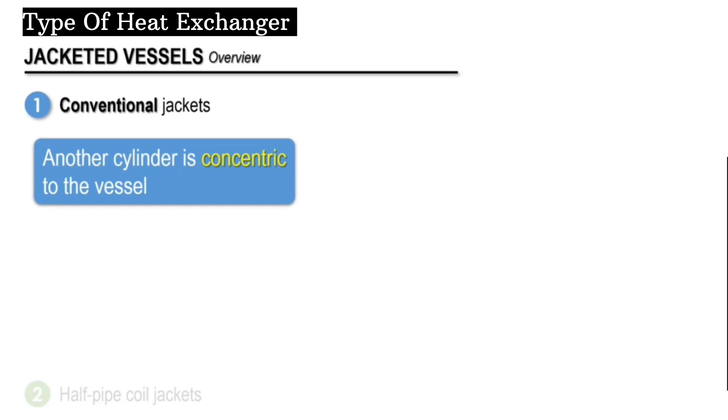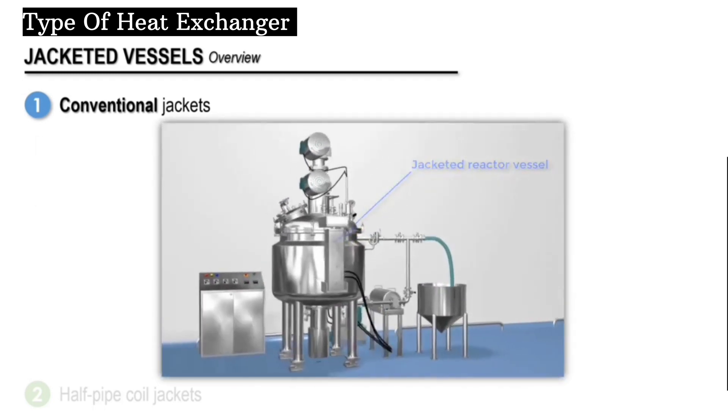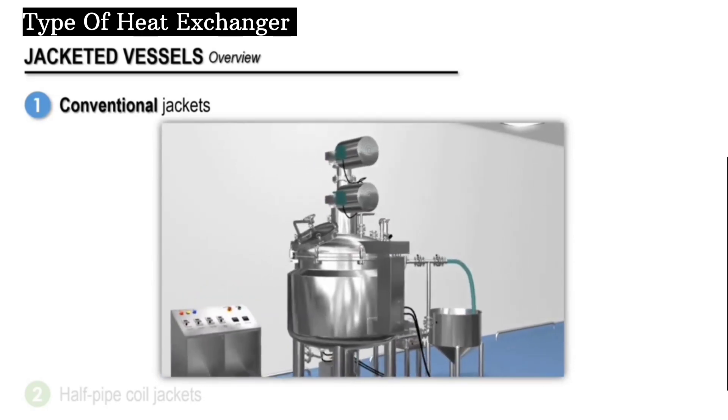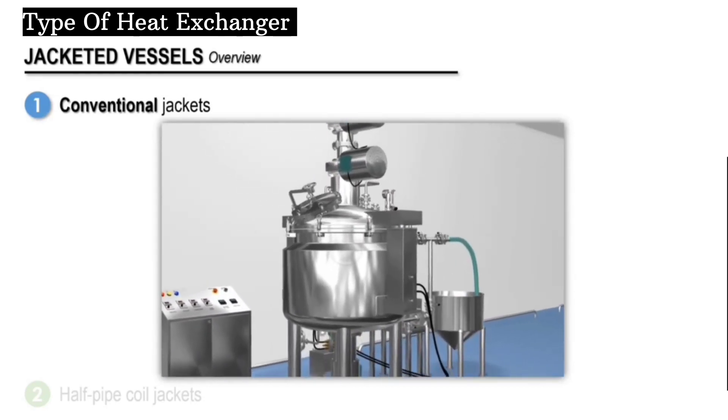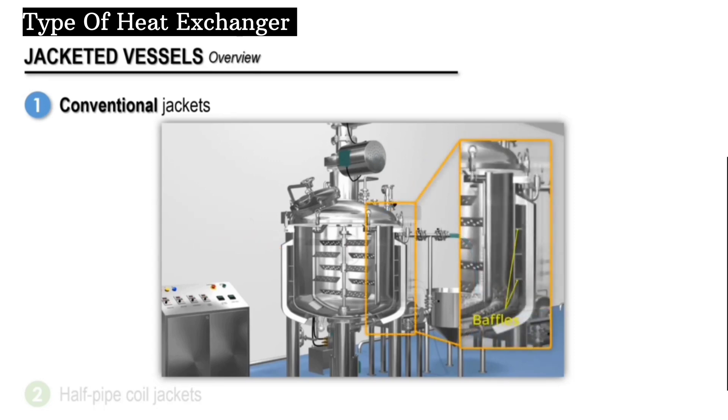An example of a jacketed chemical reactor with a simplified cross-sectional view is seen here. In this example, continuous spiral baffles are welded to the inner wall of the reactor.